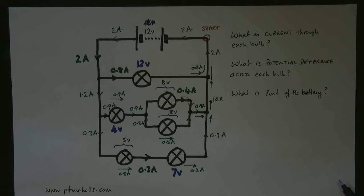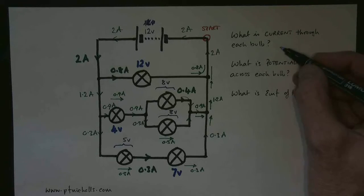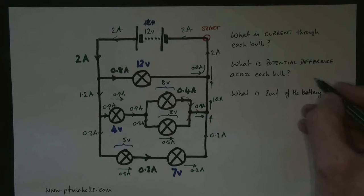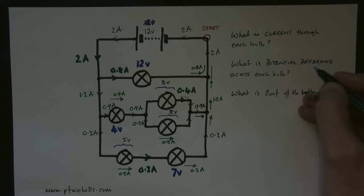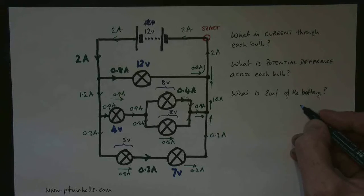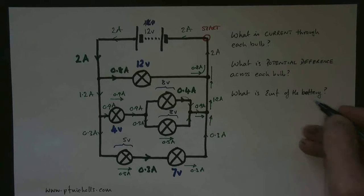So how do we answer our questions? Current for each bulb: done. Potential difference for each bulb: done. EMF for the battery: 12 volts. Job done.